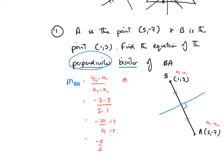I then use my knowledge about perpendicular lines. I set up m1 times m2 equals minus 1, showing my intention to find the gradient of the perpendicular line. For perpendicular lines, I flip the fraction upside down and change its sign. So minus 5 over 2 becomes positive 2 over 5. The perpendicular line has got a gradient of 2 fifths.